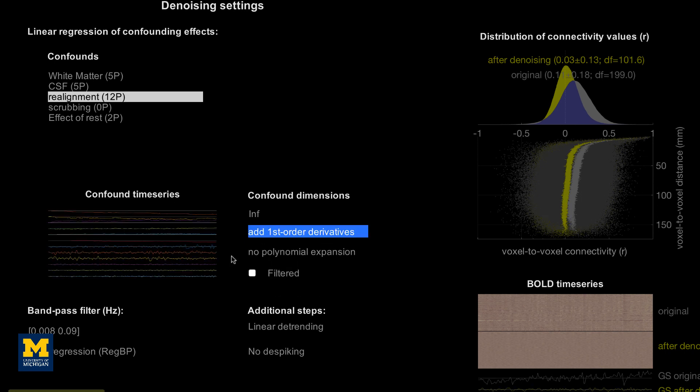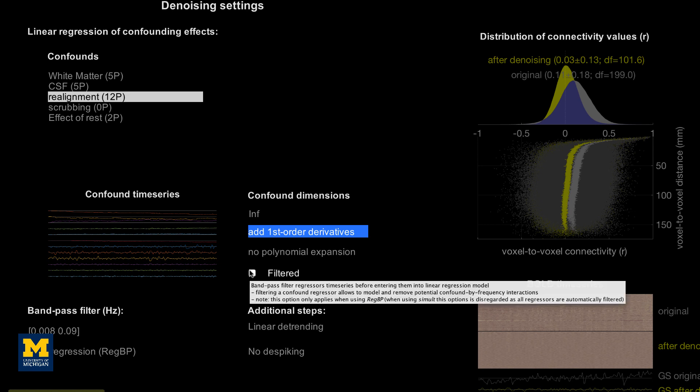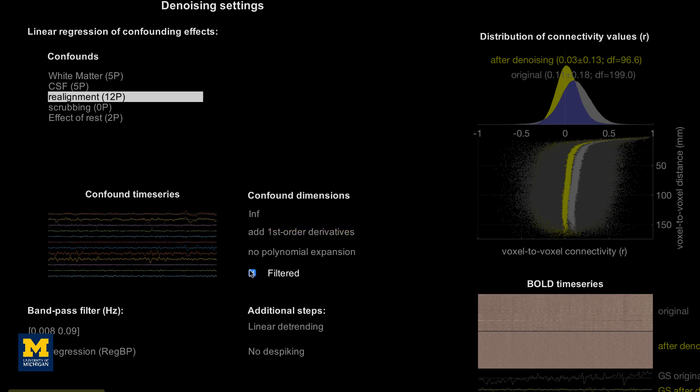The filter checkbox specifies whether the regressor should be bandpass filtered before it is entered into the model. You can do this for individual regressors by highlighting the confound regressor and checking the box, or by changing the after regression reg BP option to simultaneous. The reasons for choosing to do these are discussed more in the link to the book below.